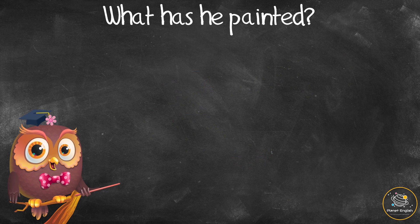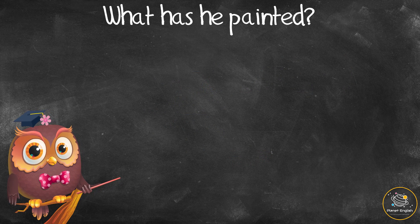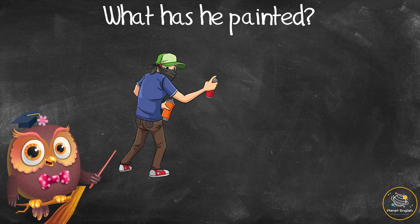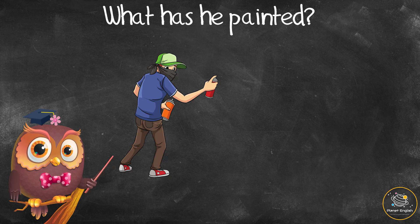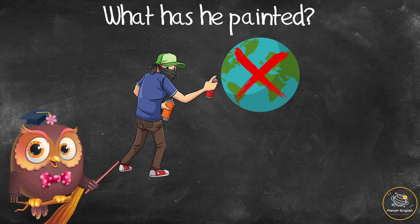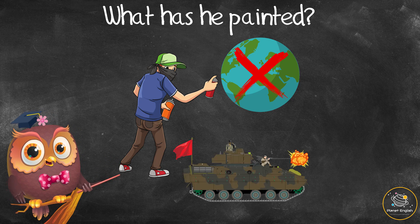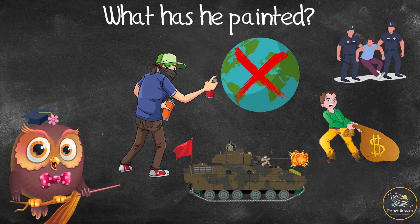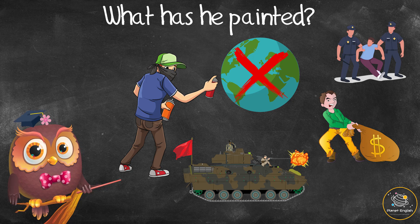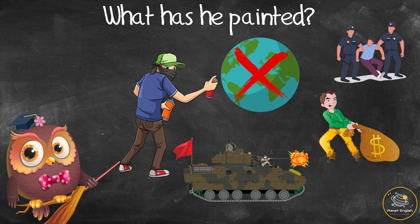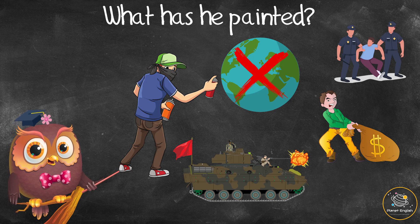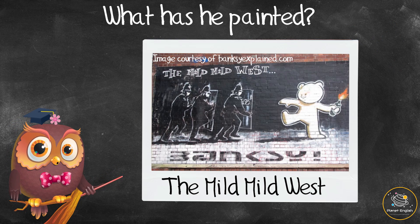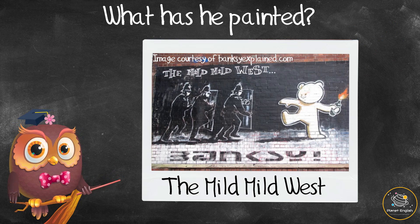However, some people believe that he is Robin Gunningham, who started using the name Robin Banks, which then became Banksy. What does he paint? Banksy uses his art to show things that he thinks are wrong in the world, for example war, greed, and police violence.